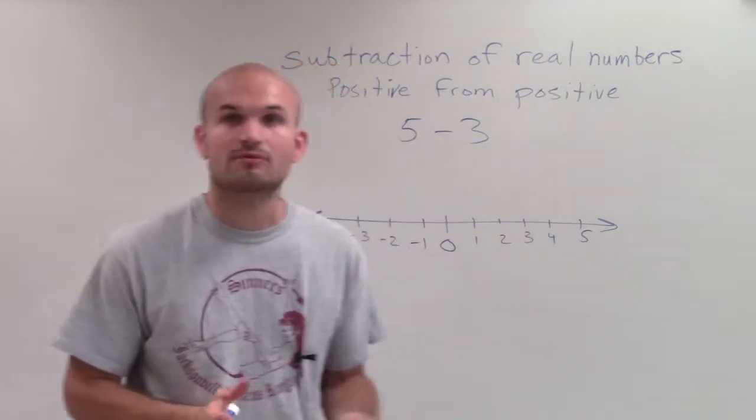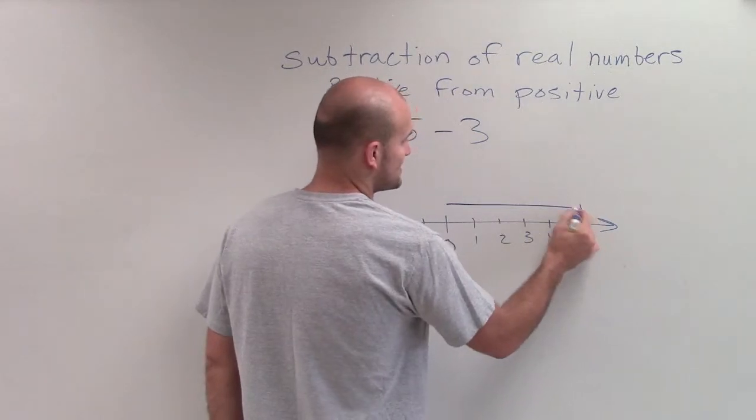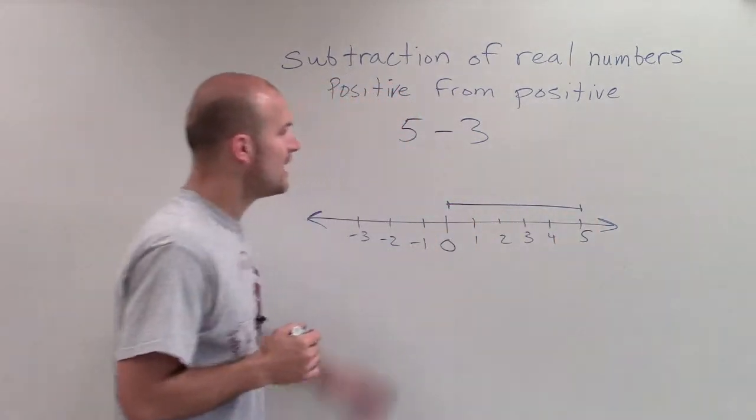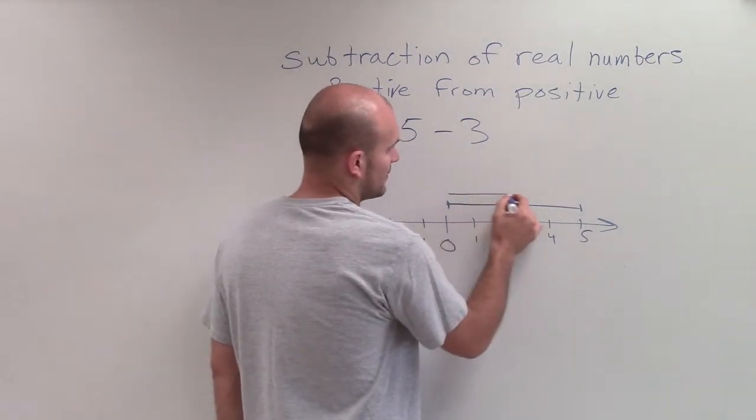Remember, our numbers can represent our distance from 0. So here I'm going to have a distance of 5, and then I also have a distance of 3.